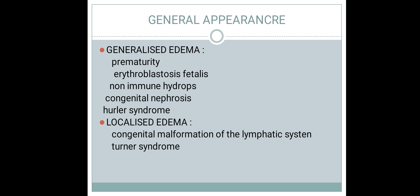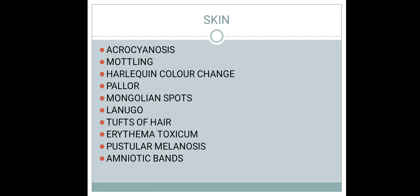Localized edema can be seen in two conditions: congenital malformation of the lymphatic system, and Turner syndrome. In Turner syndrome, localized edema can be seen in the limbs, either upper or lower.